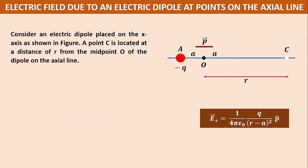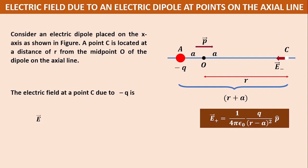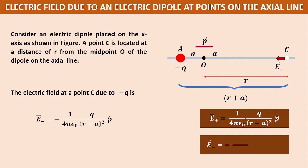Now let us consider only the minus q charge. The distance of C from minus q is r plus a. The direction of the electric field at C due to minus q will be towards minus q because it is a negative charge. The strength of electric field at C due to minus q is slightly less than the strength due to plus q, because minus q is a little farther away. So e minus vector equals minus 1 by 4 pi epsilon 0, q divided by (r plus a) whole square, p cap.